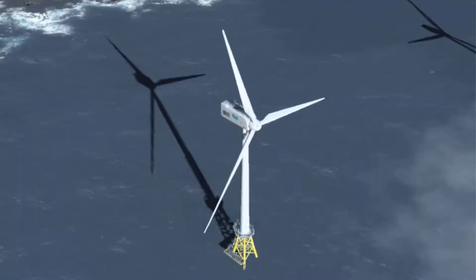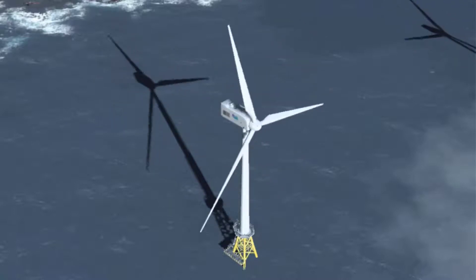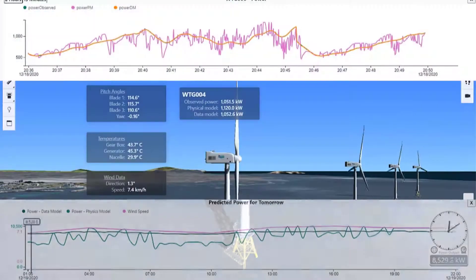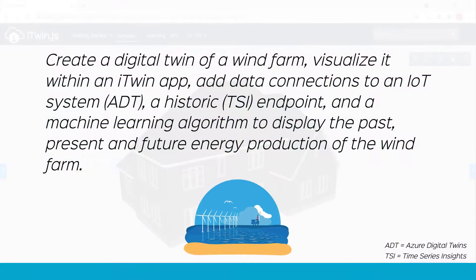In the beginning of the course we saw this smart wind farm. It had the ability to predict the energy production of the past, present, and future. The use case for this: create a digital twin of a wind farm, visualize it within an iTwin app, add data connections to an IoT system — in this case we used ADT, which is Azure Digital Twins — a historic TSI endpoint (TSI is Time Series Insights), and a machine learning algorithm to display the past, present, and future energy production of the wind farm.